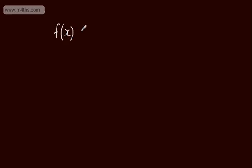In this video, we're going to look at exponential functions, and in particular the function e to the x. The general form of an exponential function is f of x is equal to a to the x, where a is a positive constant. We can write f of x is equal to a to the power of x, where a is strictly greater than 0.